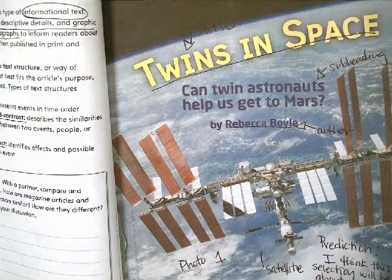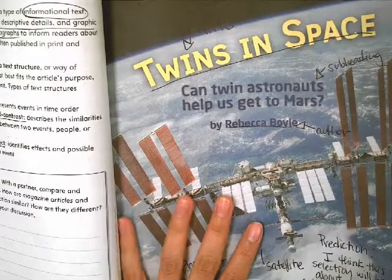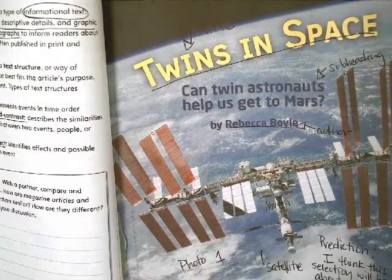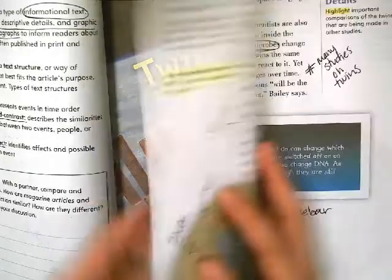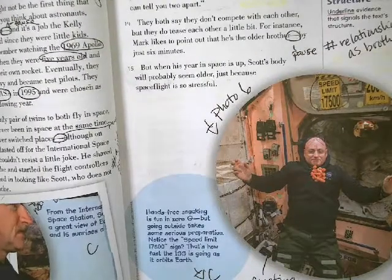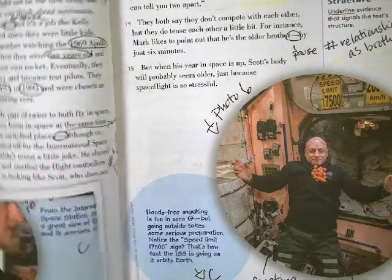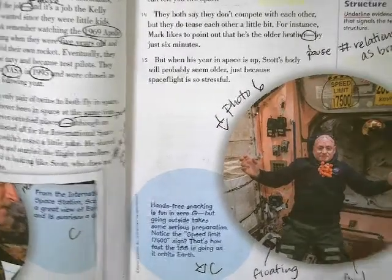We know by now that Dr. Bailey is conducting research on these astronauts to see how space affects the human body, so we'll be able to know if we can actually send a human being to Mars. Scott went out to space and his brother Mark stayed on Earth for this research.